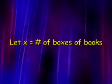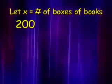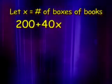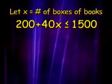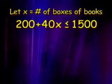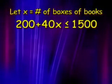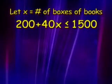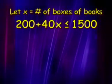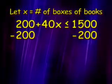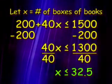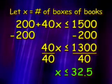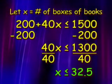We'll set up an inequality. Let x equal the number of boxes of books. We'll take the 200 pounds, then add the books, which weigh 40 pounds per box. The weight can't be more than 1,500, so our inequality is less than or equal to 1,500. We'll solve the multi-step inequality just like a multi-step equation. Subtract 200 from each side, then divide by 40. And x is less than or equal to 32 and 5 tenths. That's 32 and a half boxes.